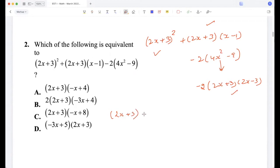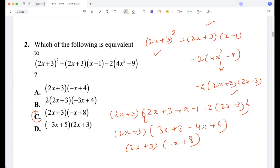So I'm left with 2x plus 3 plus x minus 1 minus 2 times 2x minus 3, right? So that becomes 2x plus 3 times 3x plus 2 minus 4x plus 6. So 2x plus 3 times minus x plus 8. Option C.